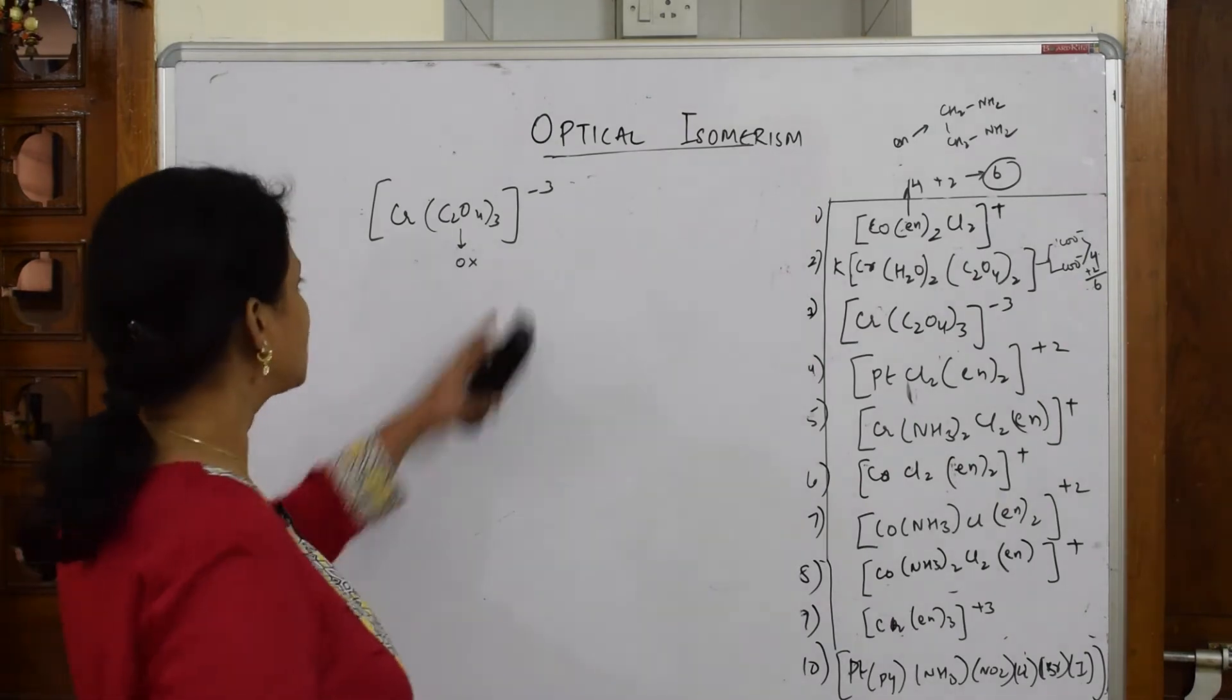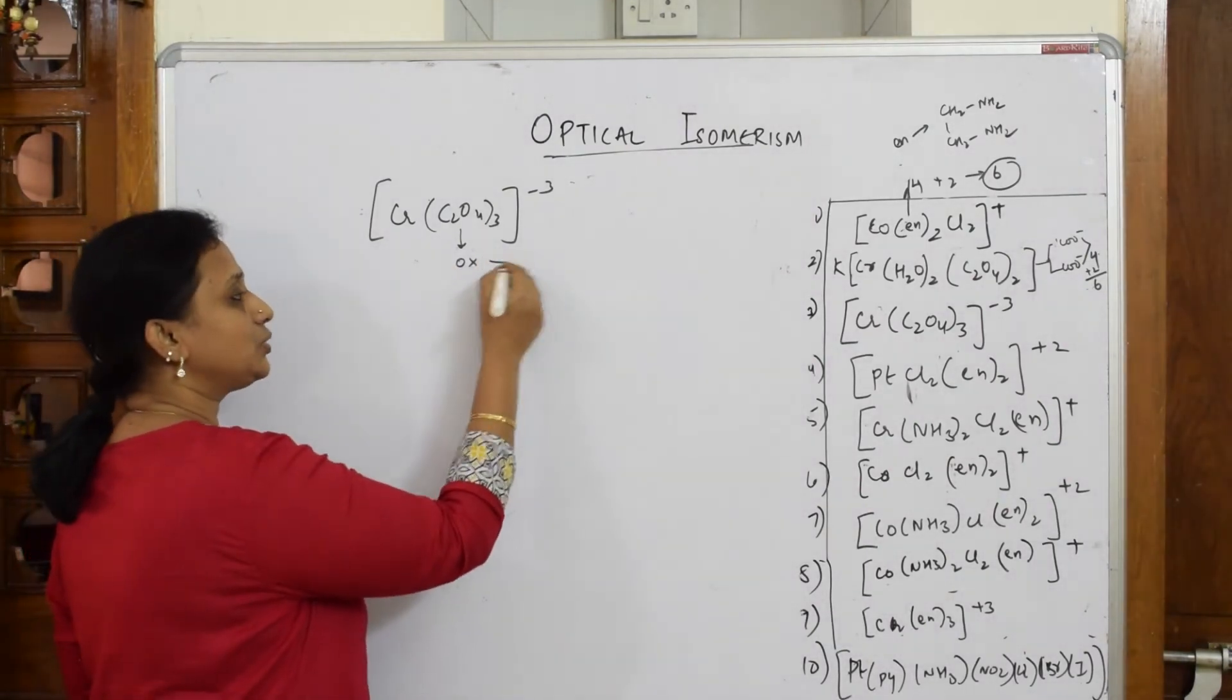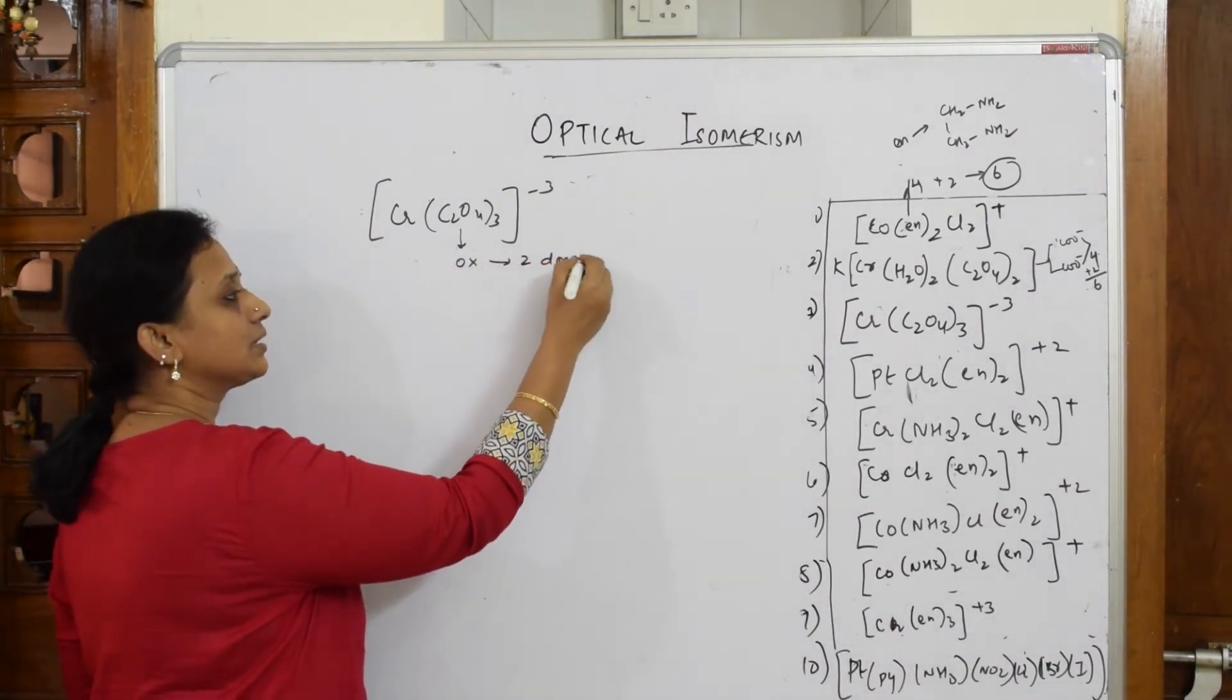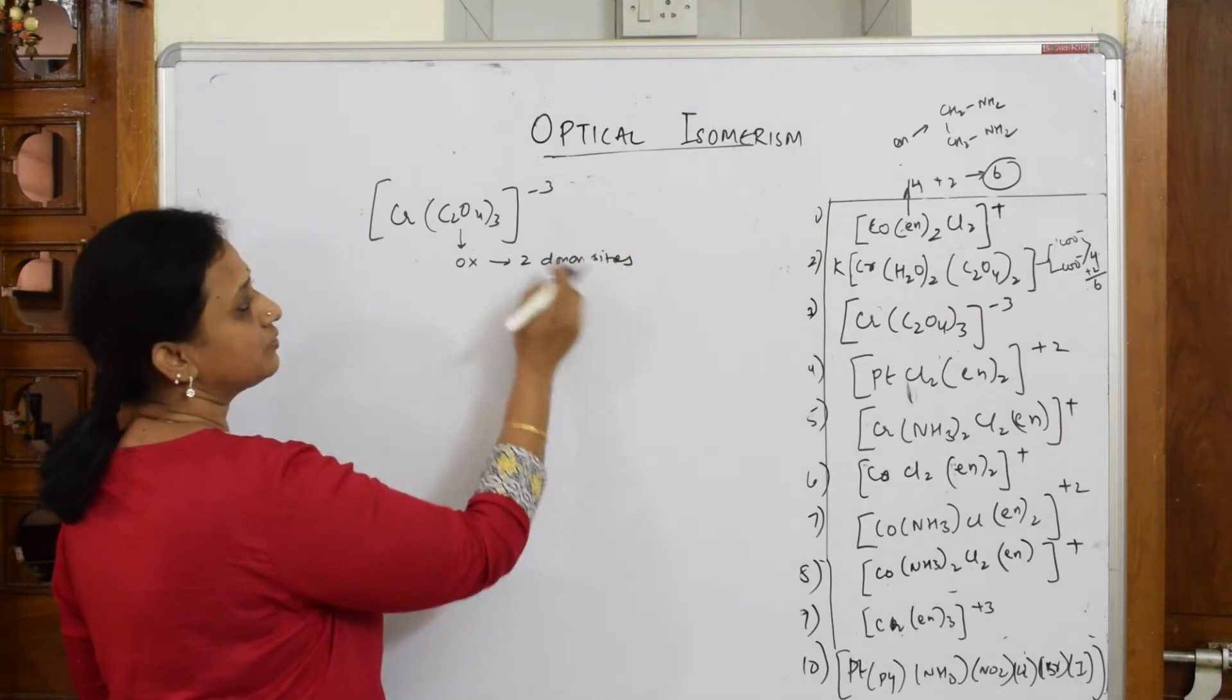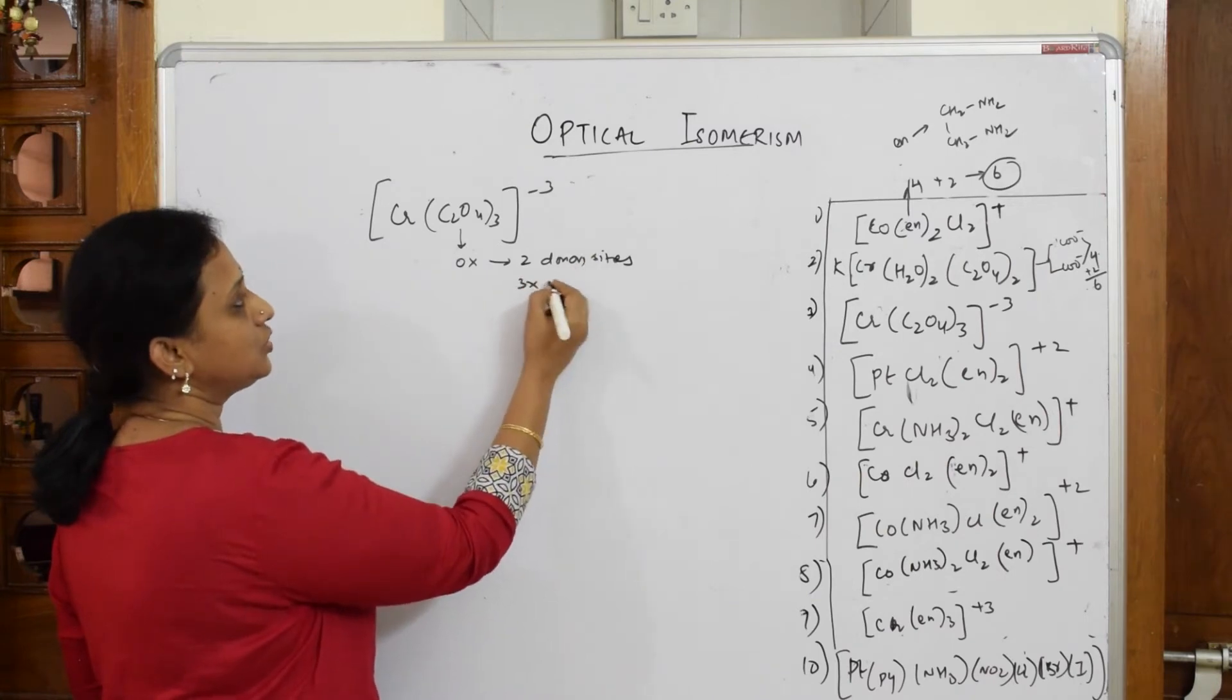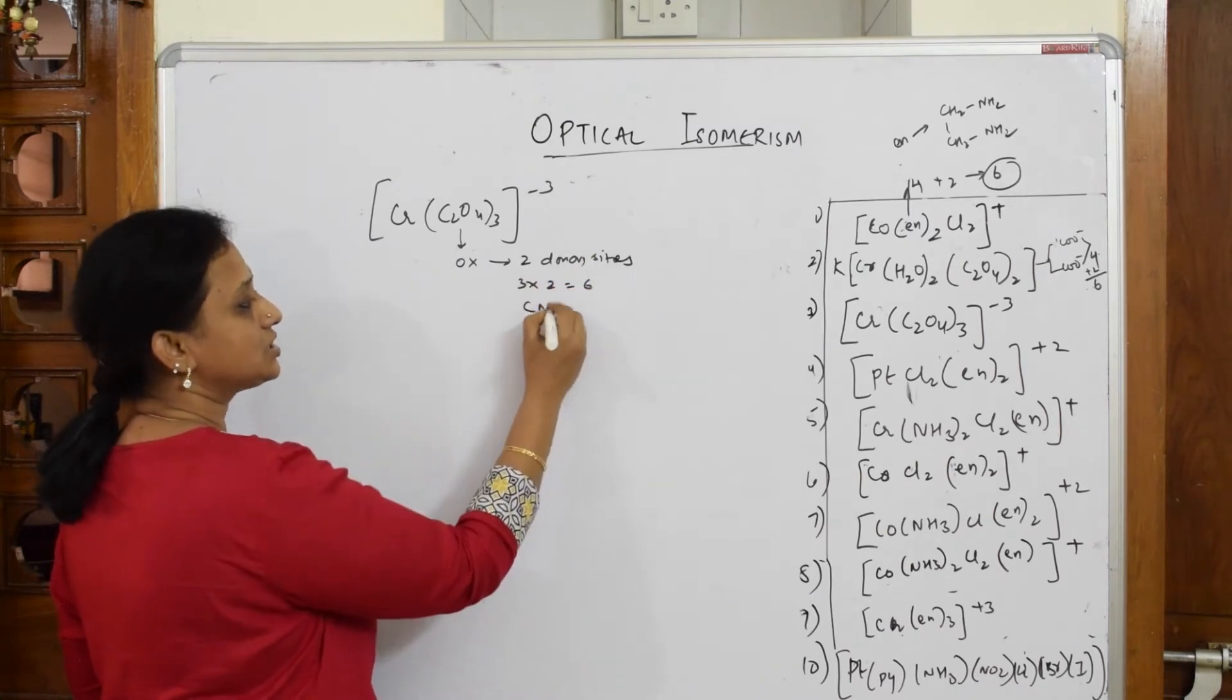For one oxalate you have two donor sites. For three oxalates, you have three times two equals six. So the coordination number is six.